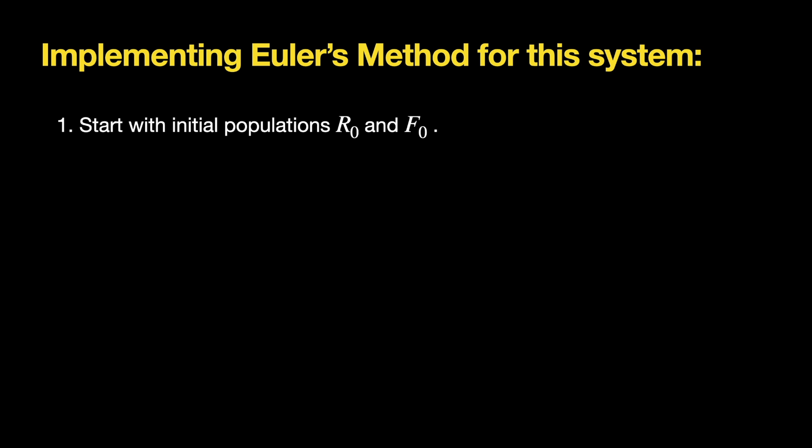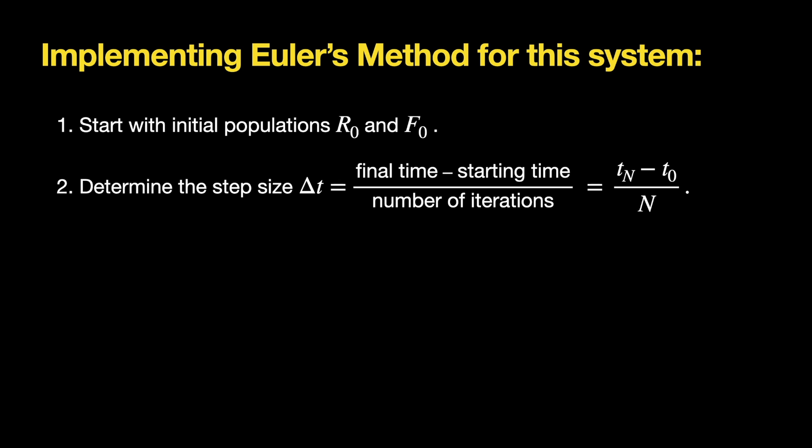The first thing we need is a jumping off point. So we want to implement this method based on some starting pair R0, F0. Next, I would determine the step size Δt. In practice, you might actually just be told that. You might be told Δt is 0.1. Alternatively, you could be told the final time, the starting time, and the number of iterations, in which case you would say Δt is the ending time minus the beginning time divided by how many steps we took.